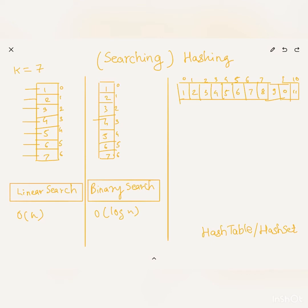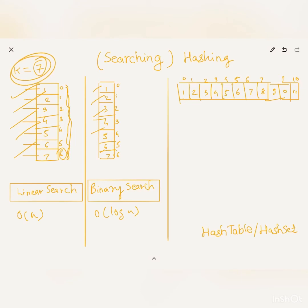Now let's look at a data structure that uses hashing internally and see how it achieves O(1) lookup. In linear and binary search, the idea is to find an index where the given element is available. For k equal to 7, we want to find whether there's any index that contains the value 7. But now imagine if we could directly calculate the index just from the value of k — that would be much quicker and would not involve any comparisons.